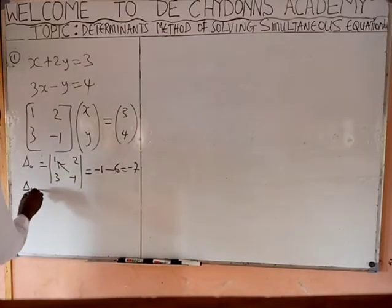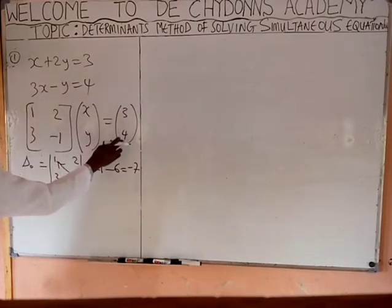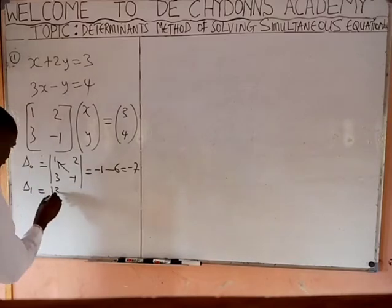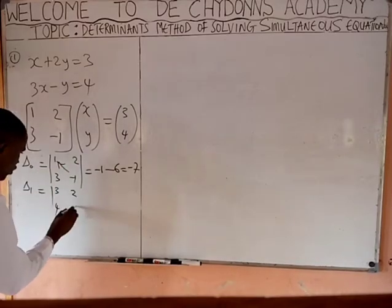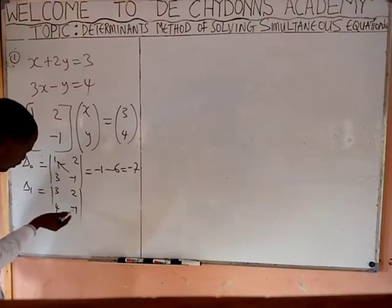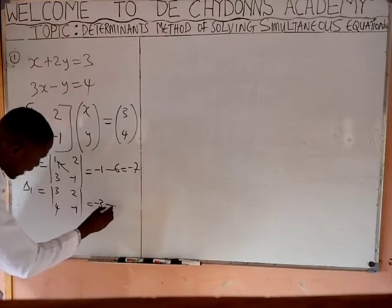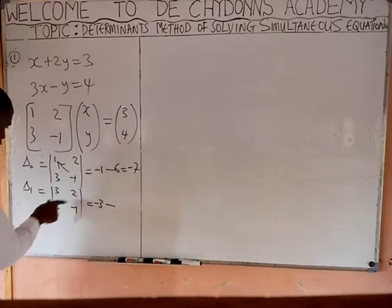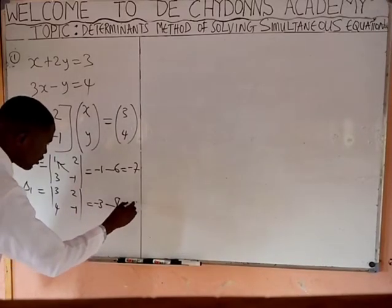Next, get Delta 1. Delta 1 means remove the first column, carry 3 and 4 and put them here. You write 3, 4, then write 2 and minus 1. Product of the diagonal element: 3 times minus 1 = minus 3. You must put minus 4 times 2 = 8. That gives you minus 11.